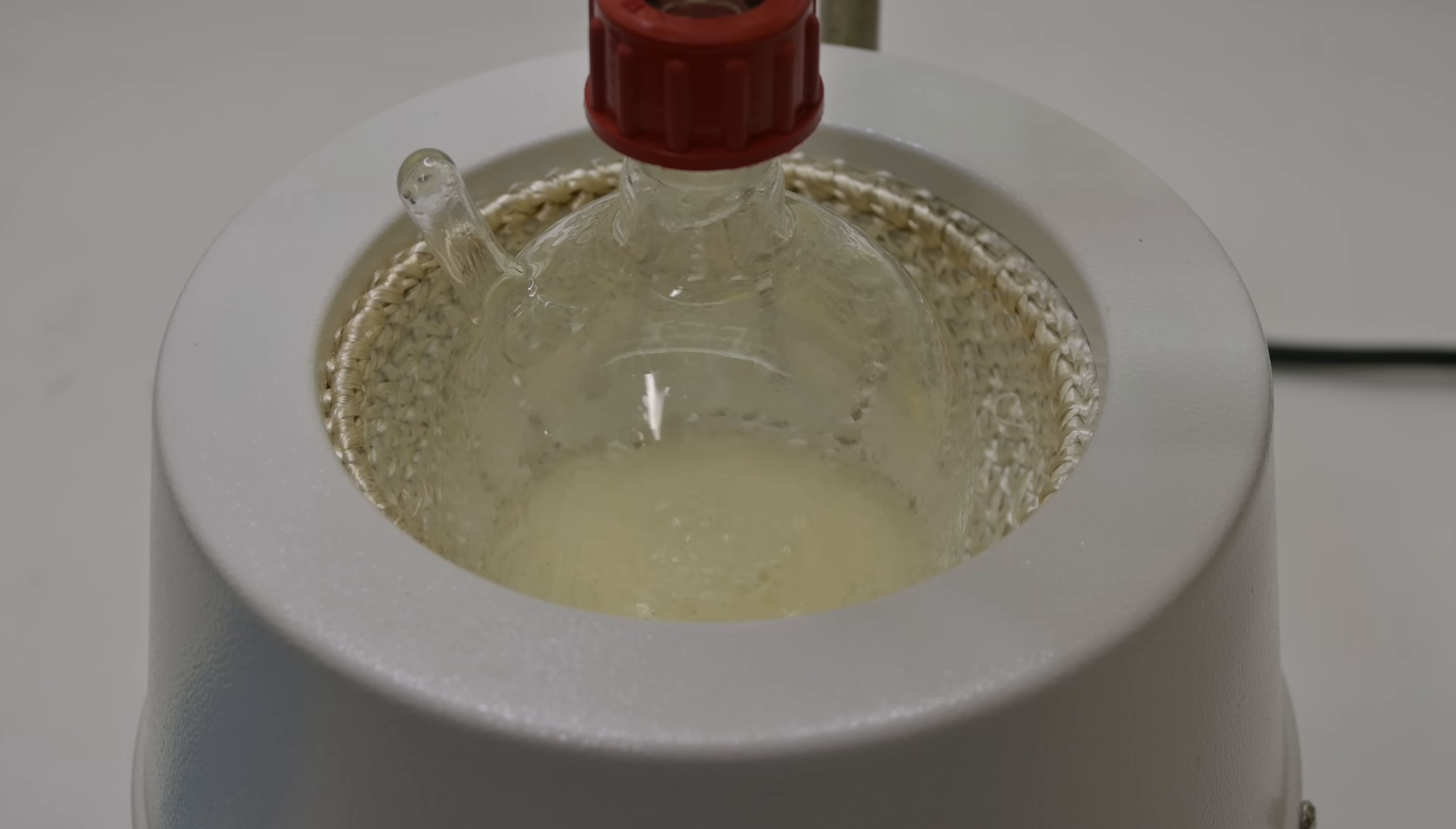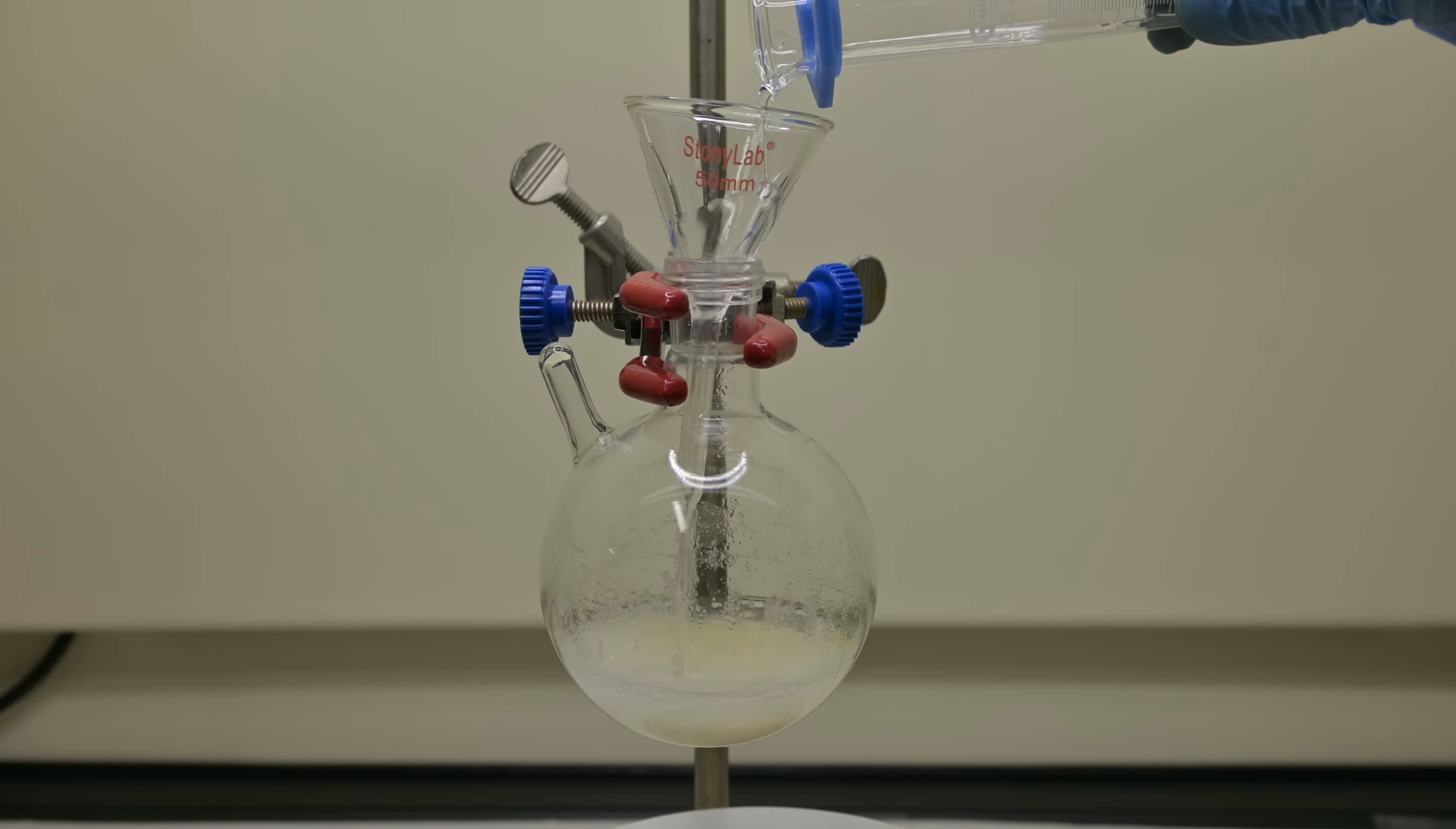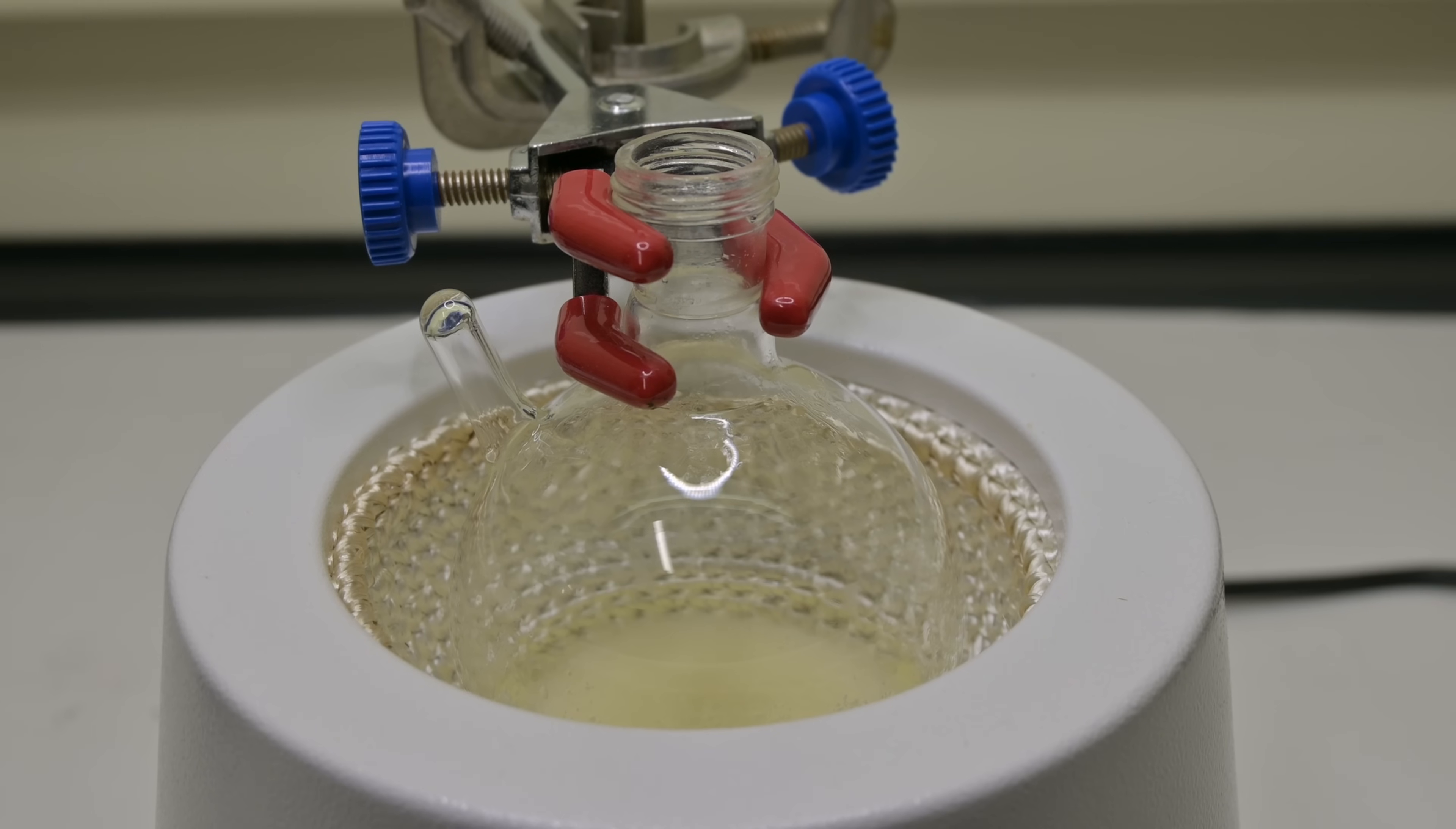Throughout this step, I keep an eye on the condenser to make sure everything is cycling properly and there's no leakage. After hydrolysis is complete, I turn off the heat and allow the mixture to cool slightly. Then I dilute the reaction by adding 15 mL of cold water. This helps bring the solution to a manageable concentration and also cools it down in preparation for the next step. I stir the mixture to ensure it's well and evenly mixed.